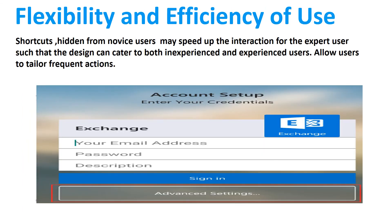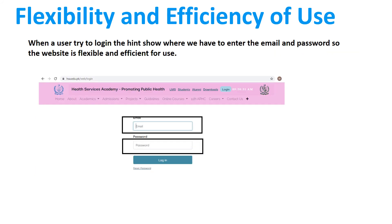Flexibility and efficiency of use: shortcuts hidden from novice users may speed up interaction for expert users, such that the design can cater to both inexperienced and experienced users, and allow users to tailor frequent actions. For example, in the selected website, when a user tries to login, a hint shows where to enter the email and the password. So the website is flexible and efficient for both types of users.